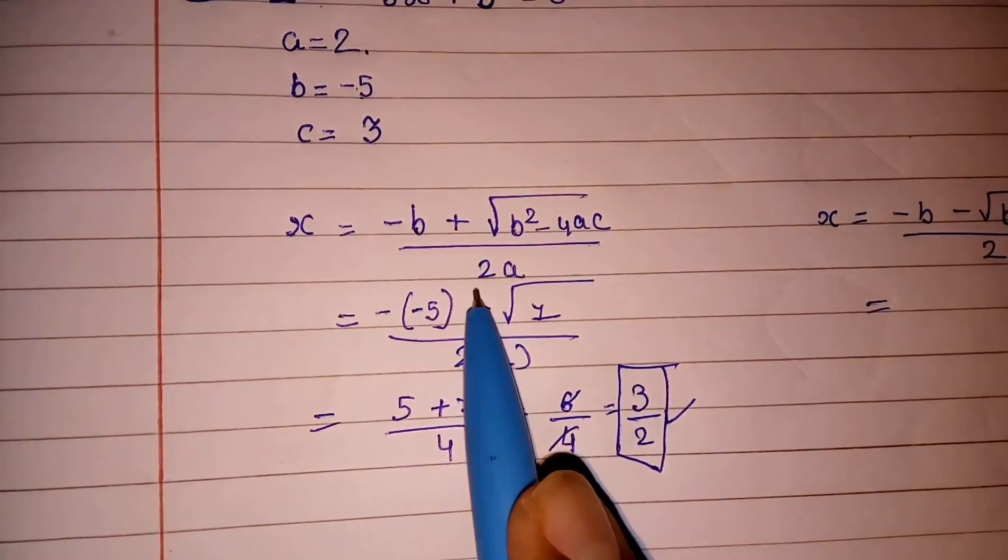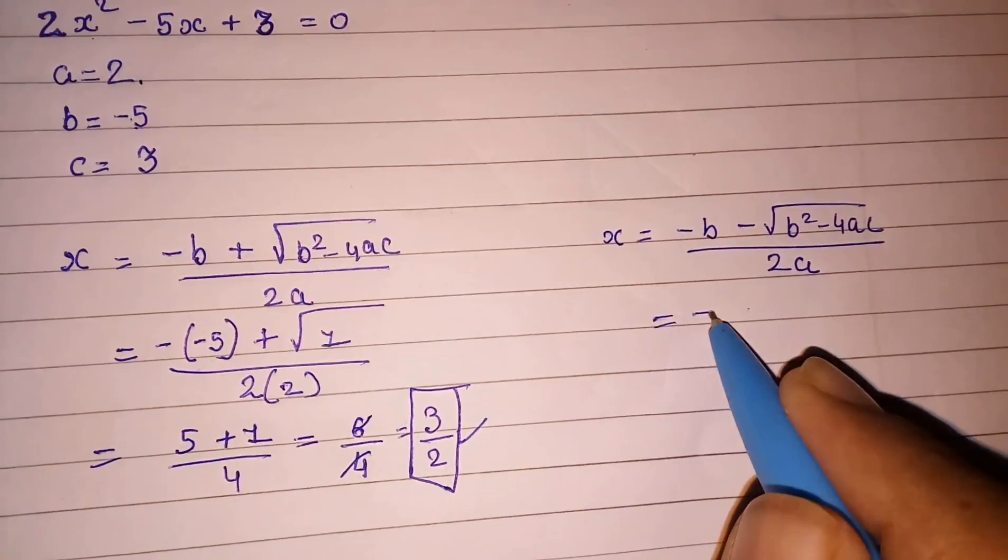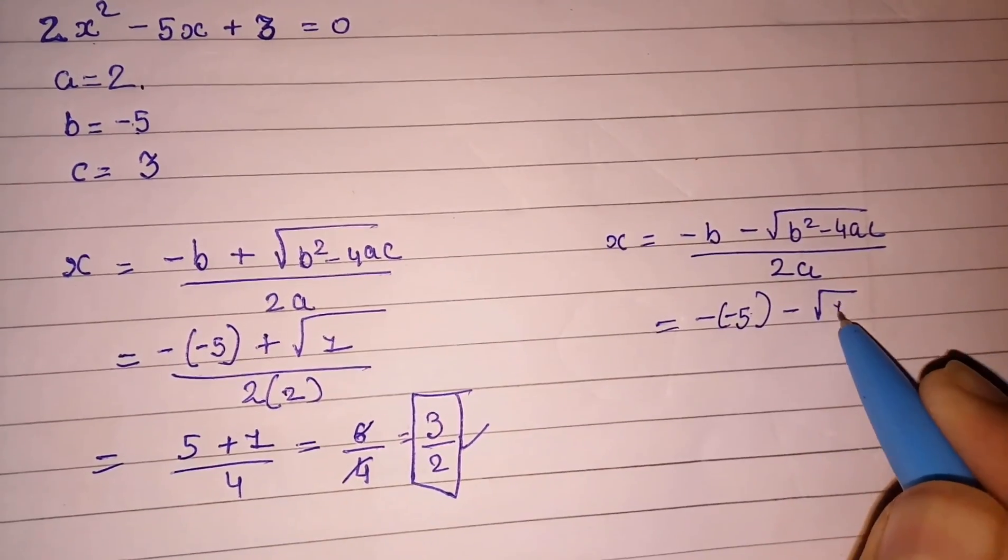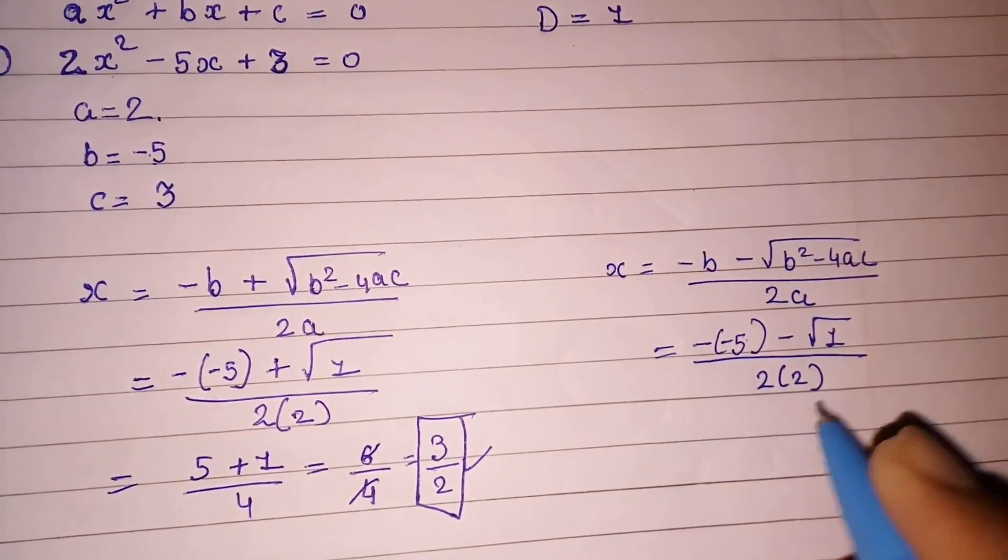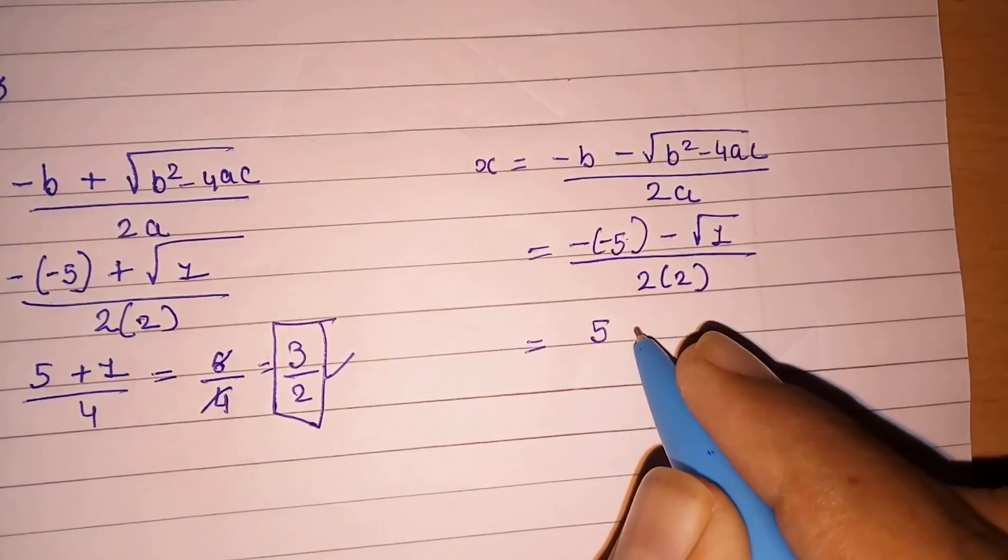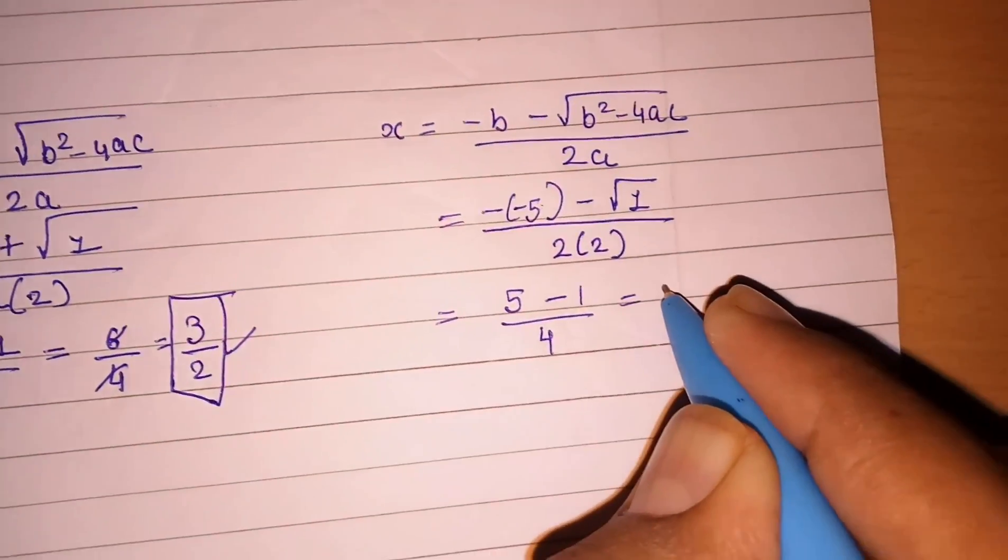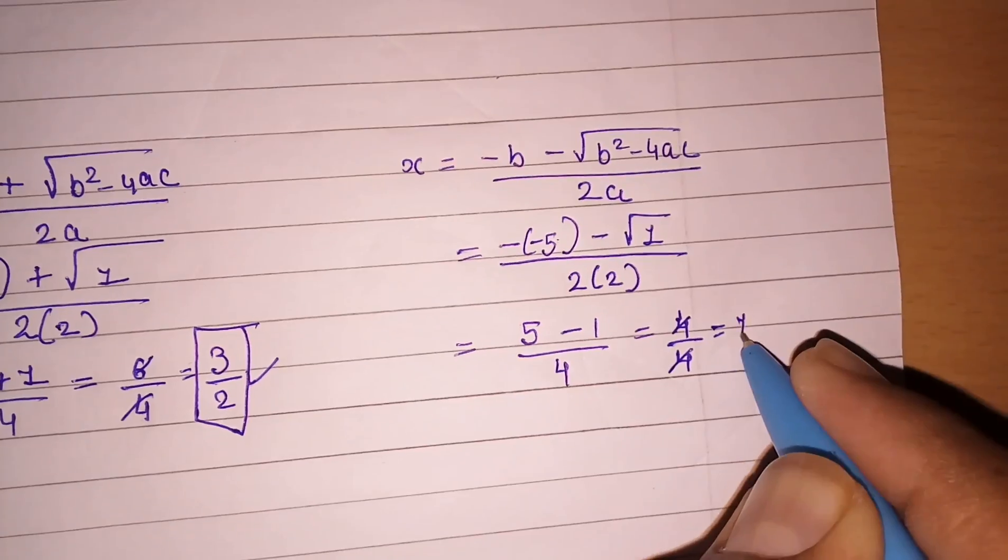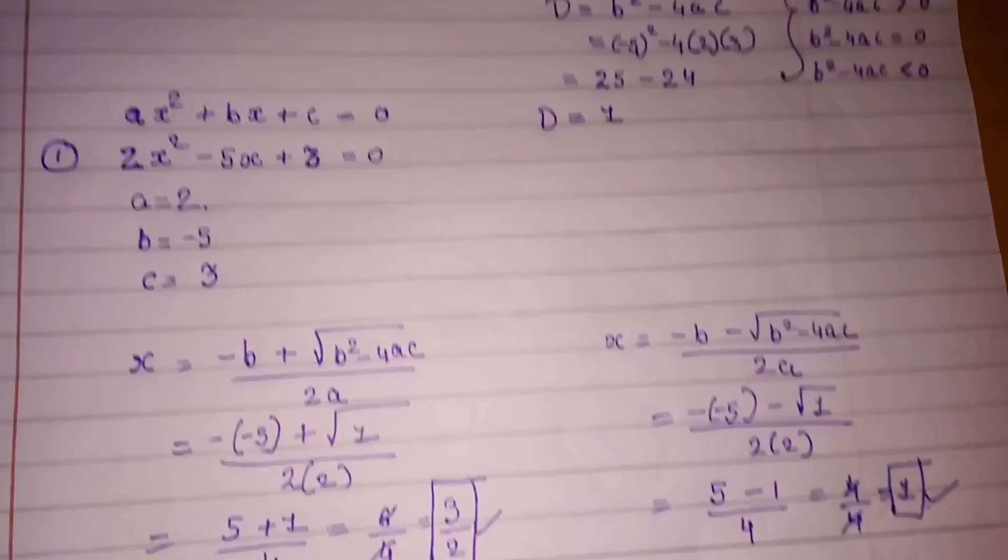Now we will move here. We had found -(-5) in the same things, only the difference will be plus 1 here and minus 1 on the next side. So -(-5) - √1 by 2×2, we will get 5-1 by 4, it will be 4 upon 4 = 1. So this is our next root.